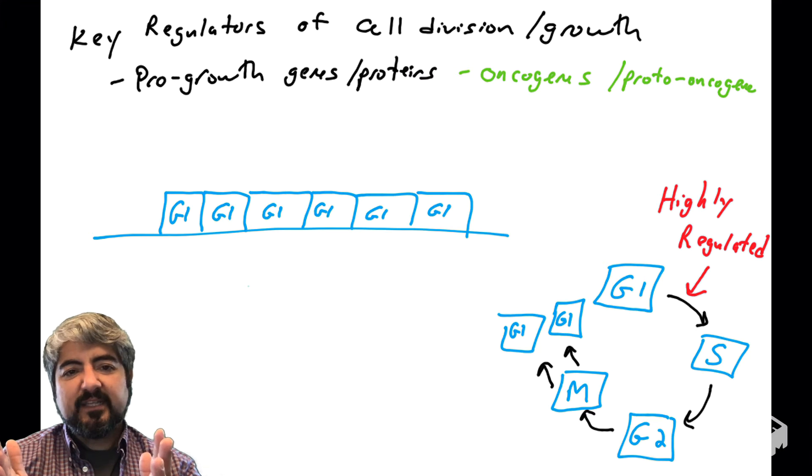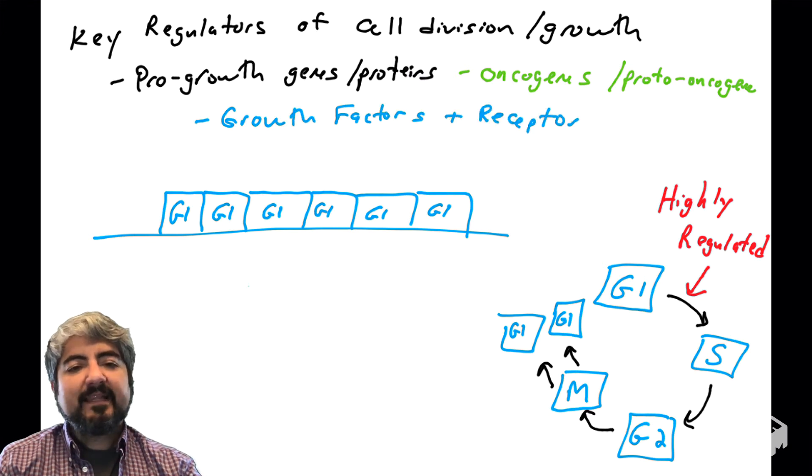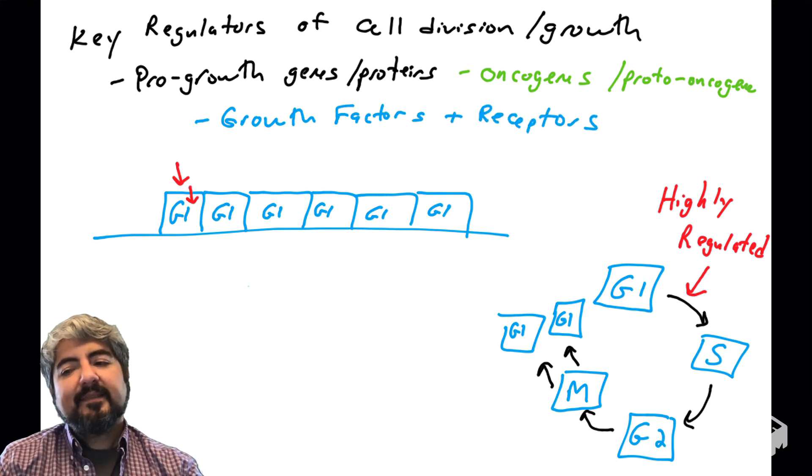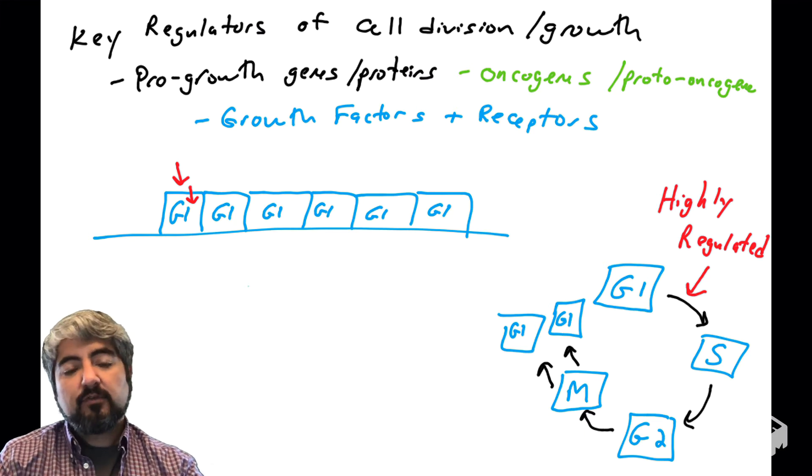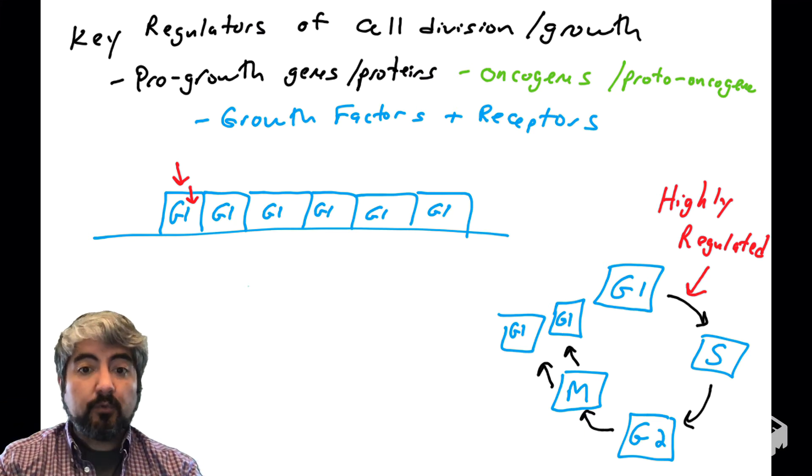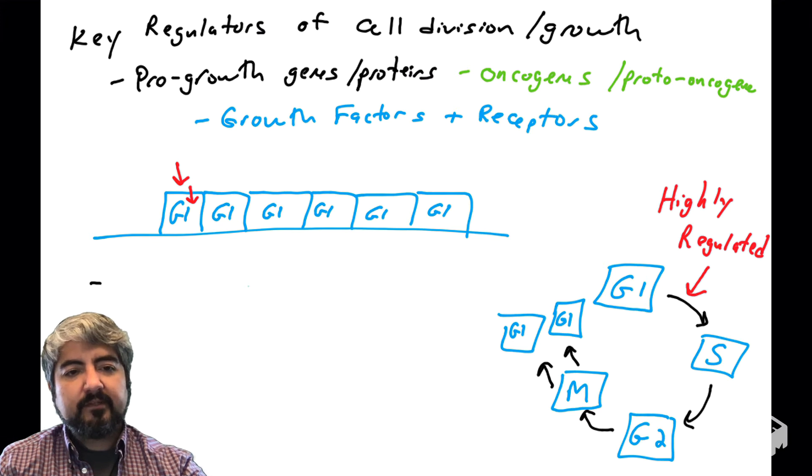There are many genes that we're going to talk about that are oncogenes. When they're mutated, they promote growth. And one of the first classes of genes and proteins that are involved that we're going to talk about are growth factors and the receptors that bind growth factors. They tell cells to go through the cell cycle, so we're going to learn about those first.